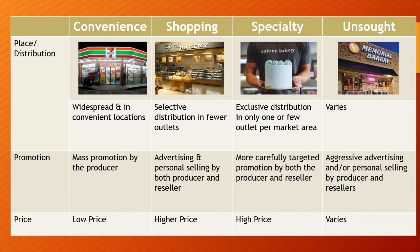Going back to that funeral cake: most people don't walk into a bakery asking for one. Often this might be handled by someone planning the wake — these days, professional event planners take care of everything. So they may come to you and say, 'Would you like to get this? I think it would be good.' Each of the four groups — convenience, shopping, specialty, and unsought — will have different approaches in terms of product, place, promotion, and price.